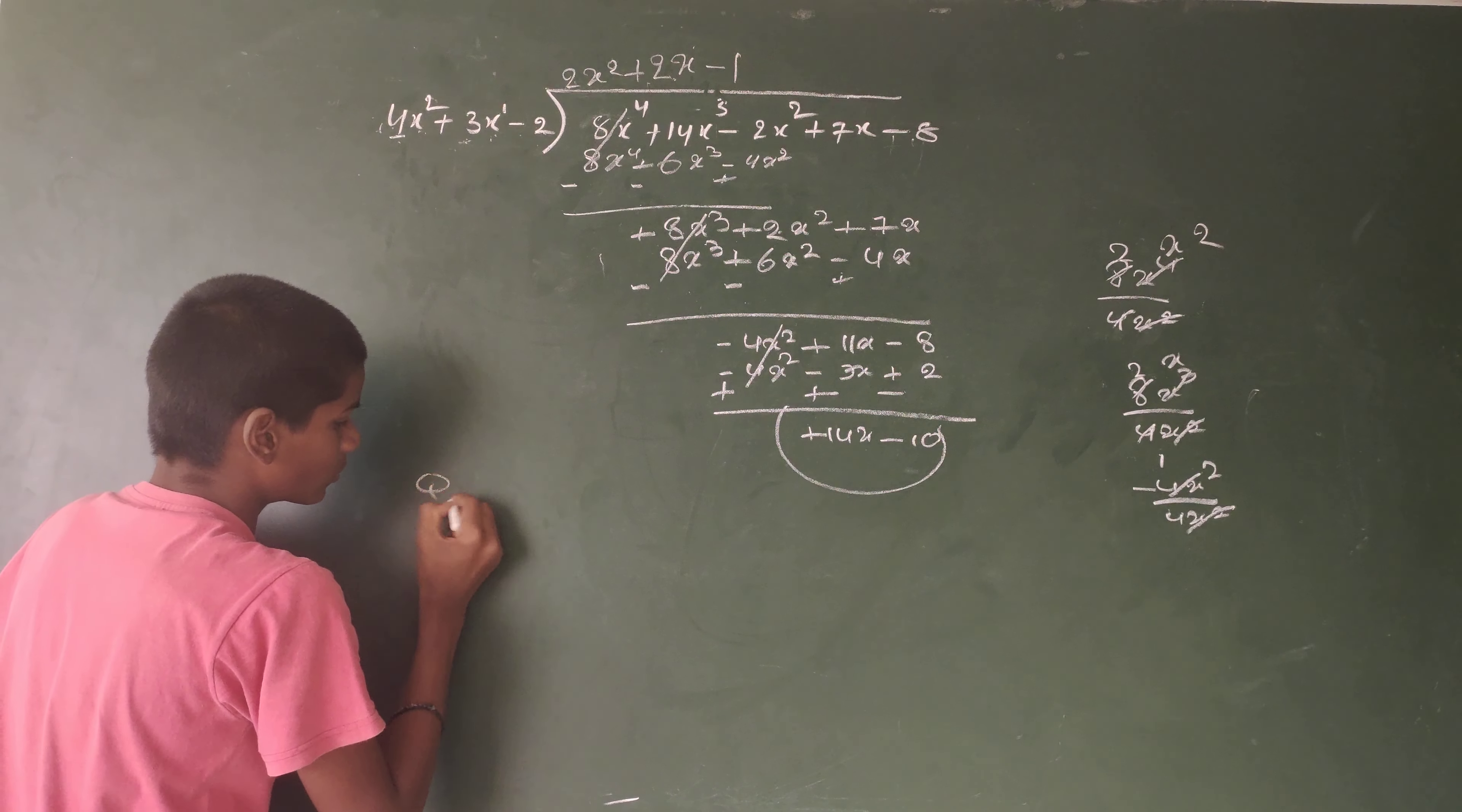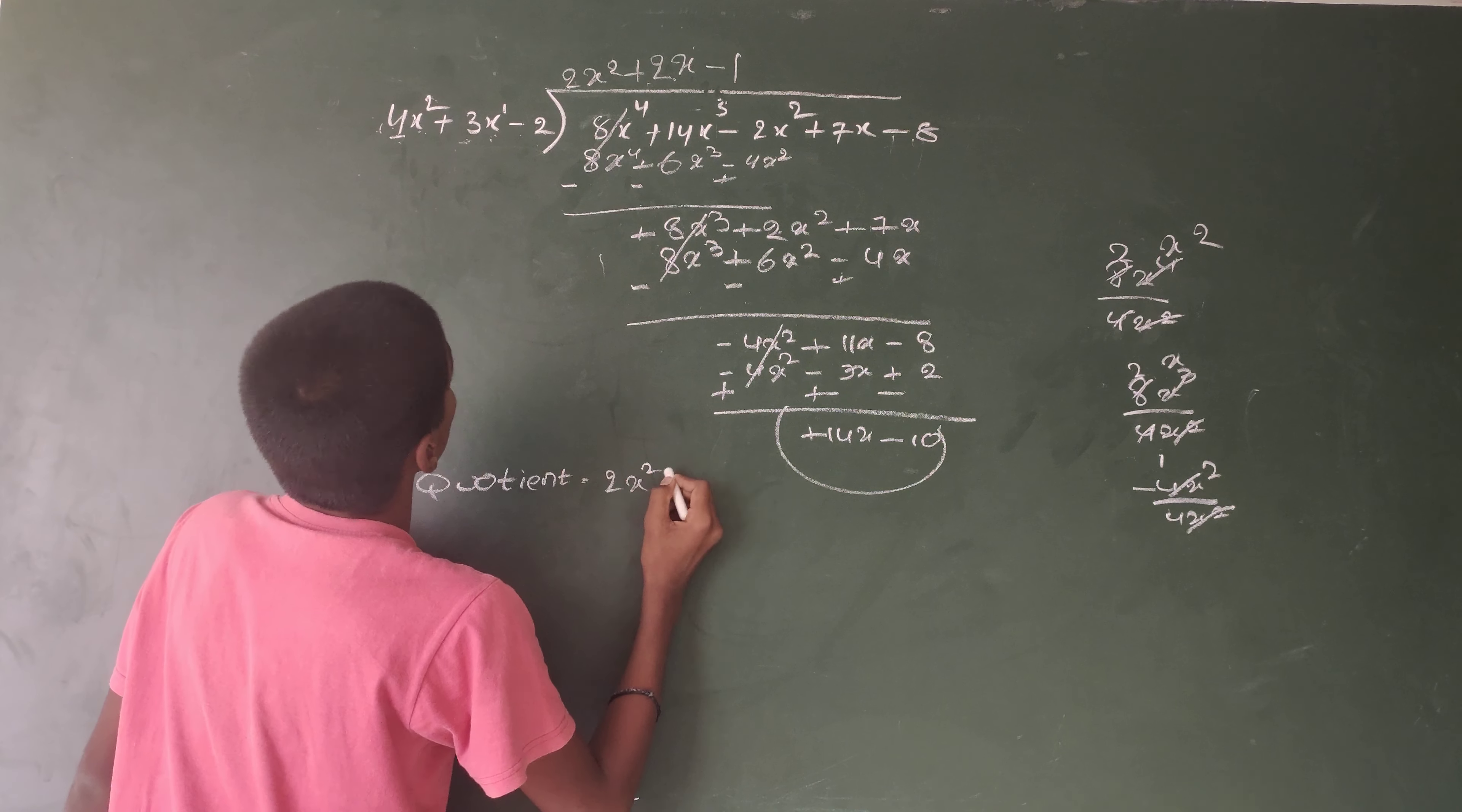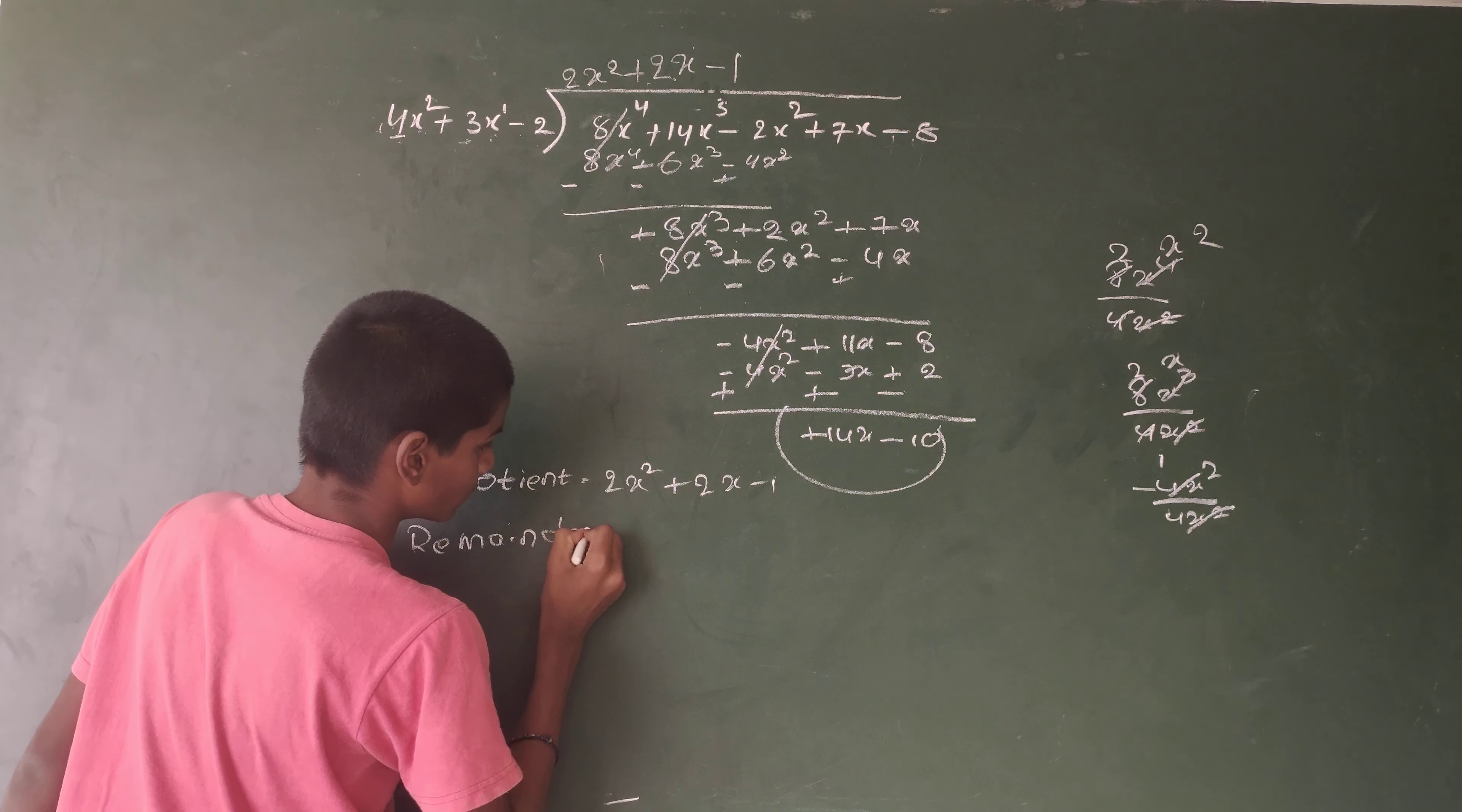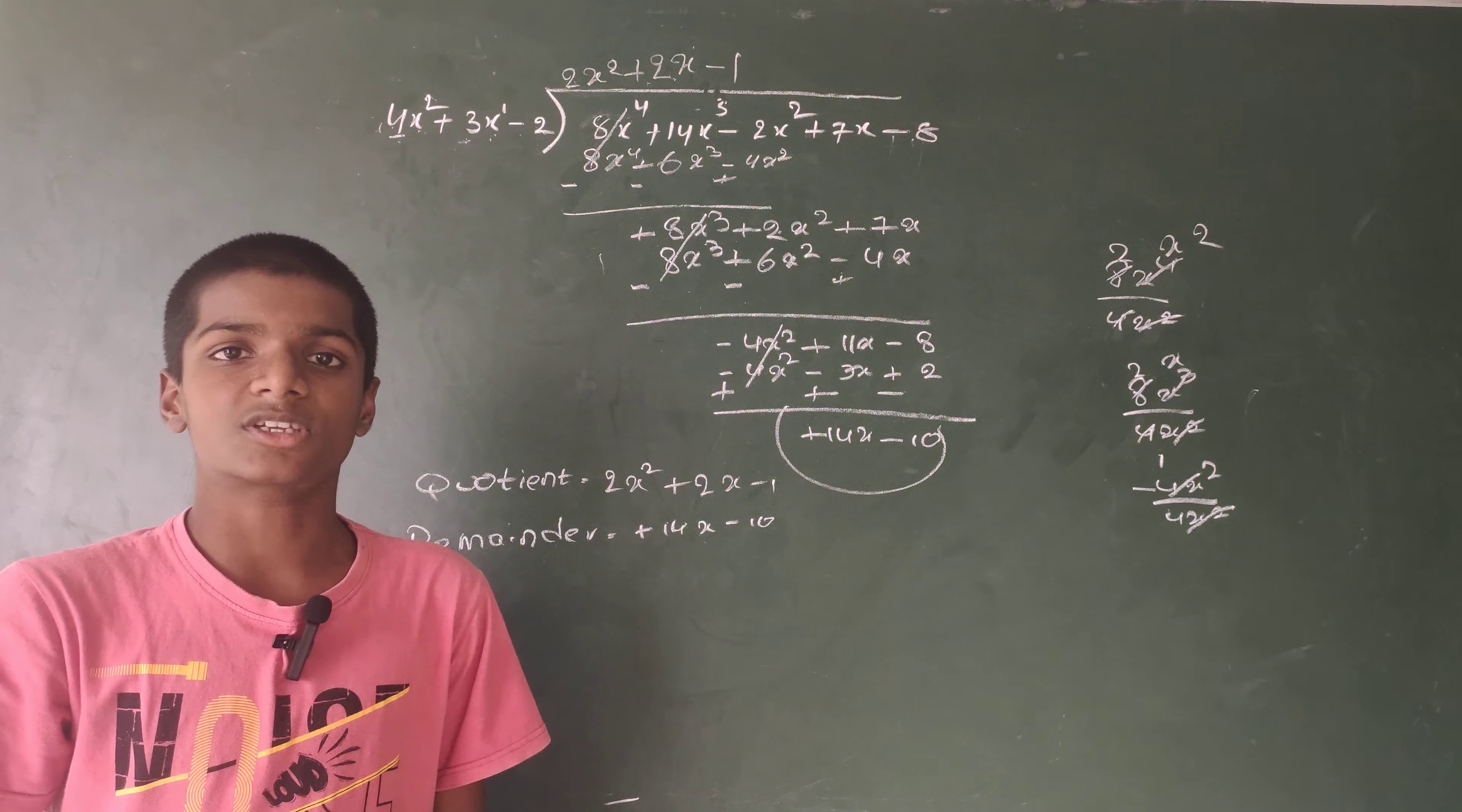So quotient equals 2x² plus 2x minus 1. Remainder equals 14x minus 10. Thank you. Like, share, and subscribe.